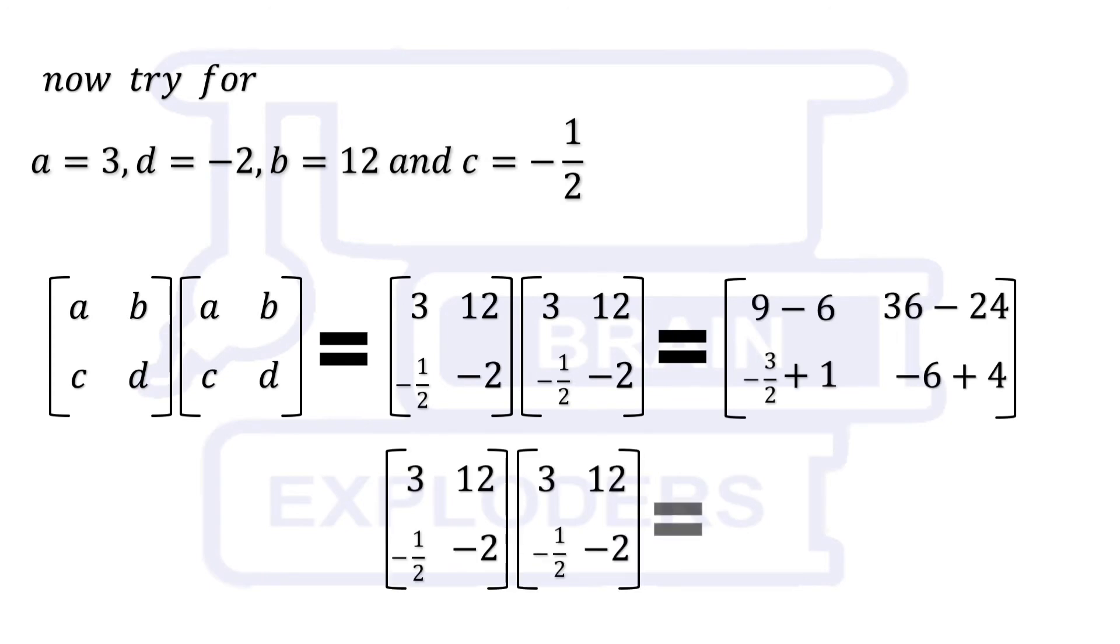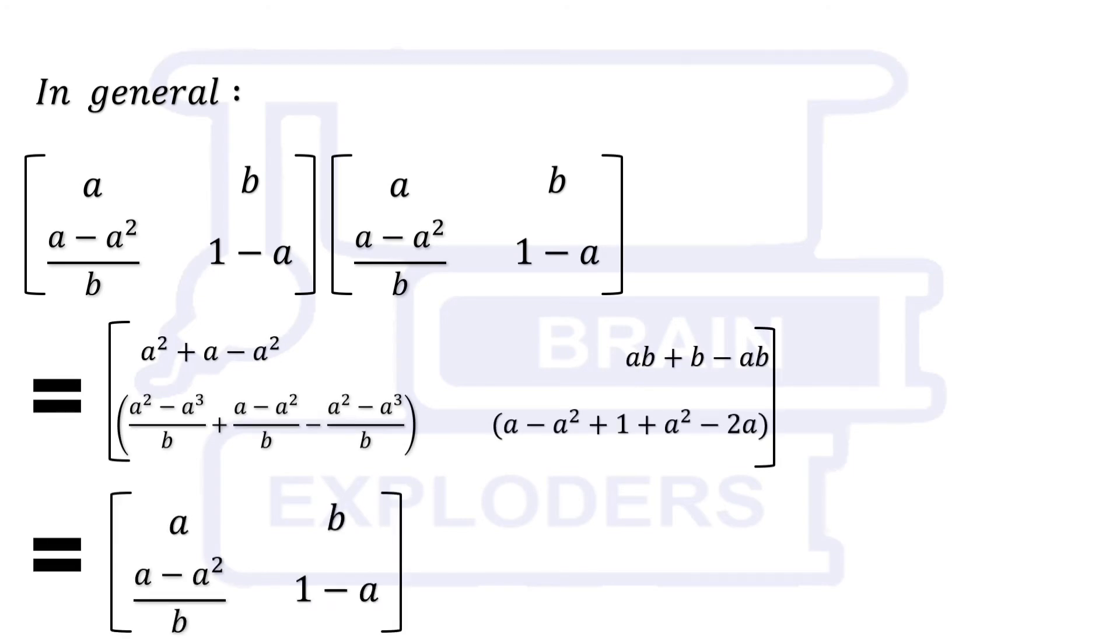There is a general matrix in terms of A and B that will always satisfy the condition if B is not 0. There are some more similar form of matrices.